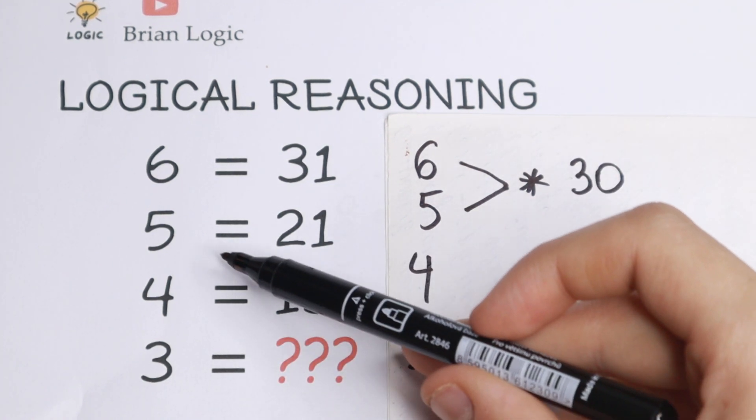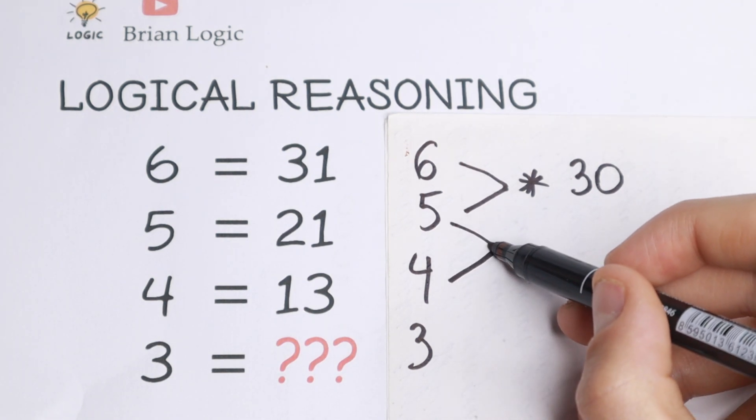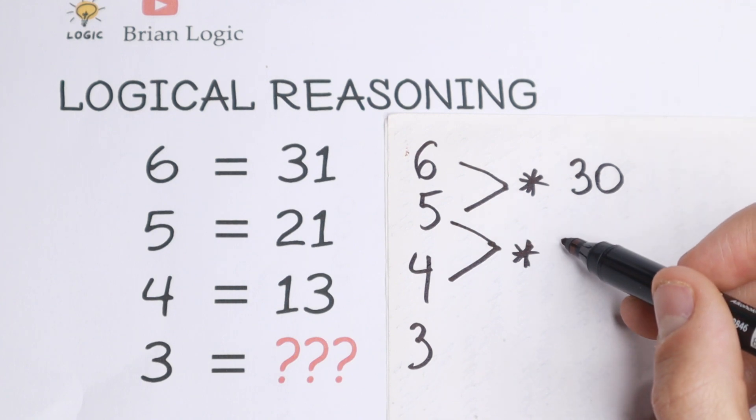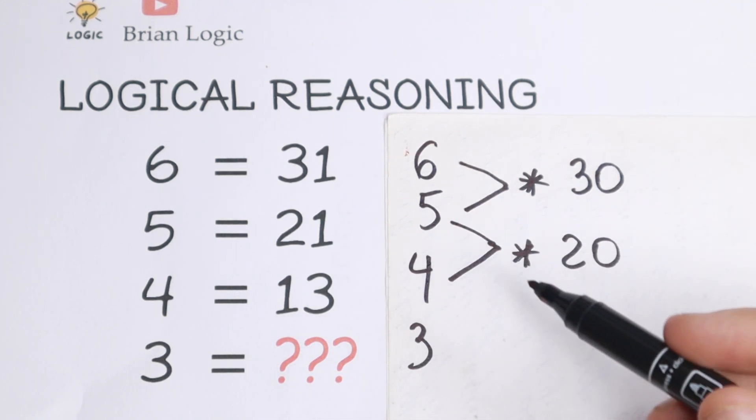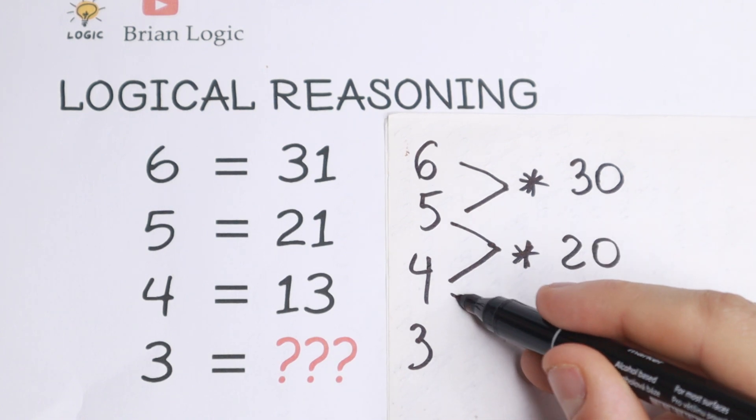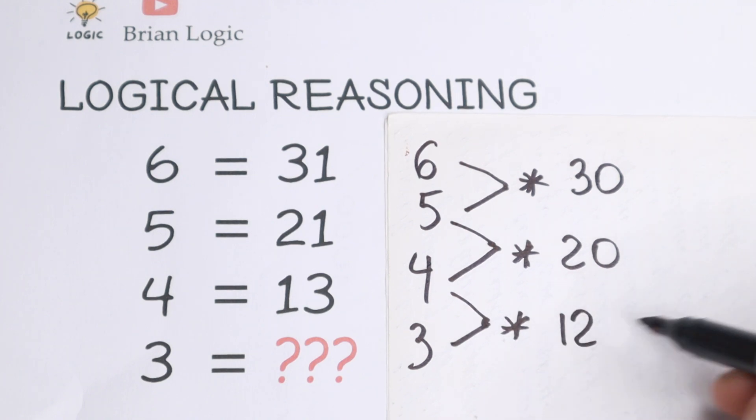And take a look at the next two numbers, the next two pairs of numbers. 5 times 4, if we're talking about multiplication, will be 20. And the last one, 4 times 3 will be equal to 12.